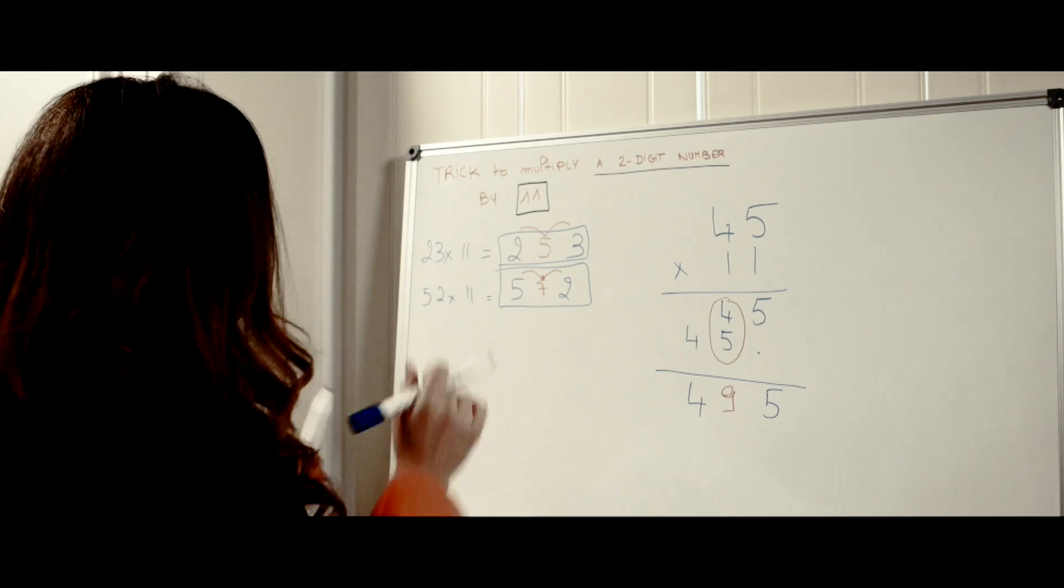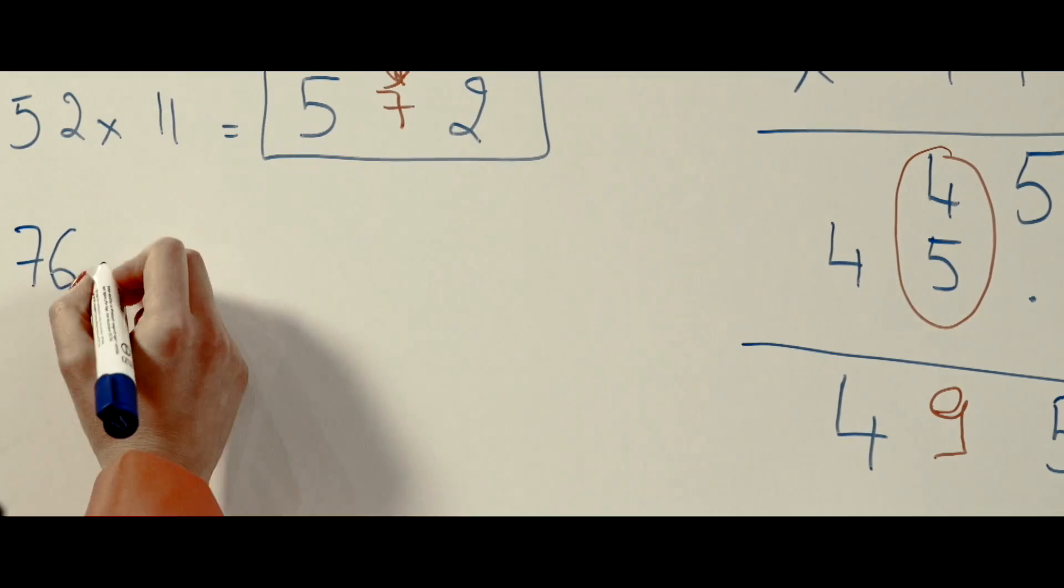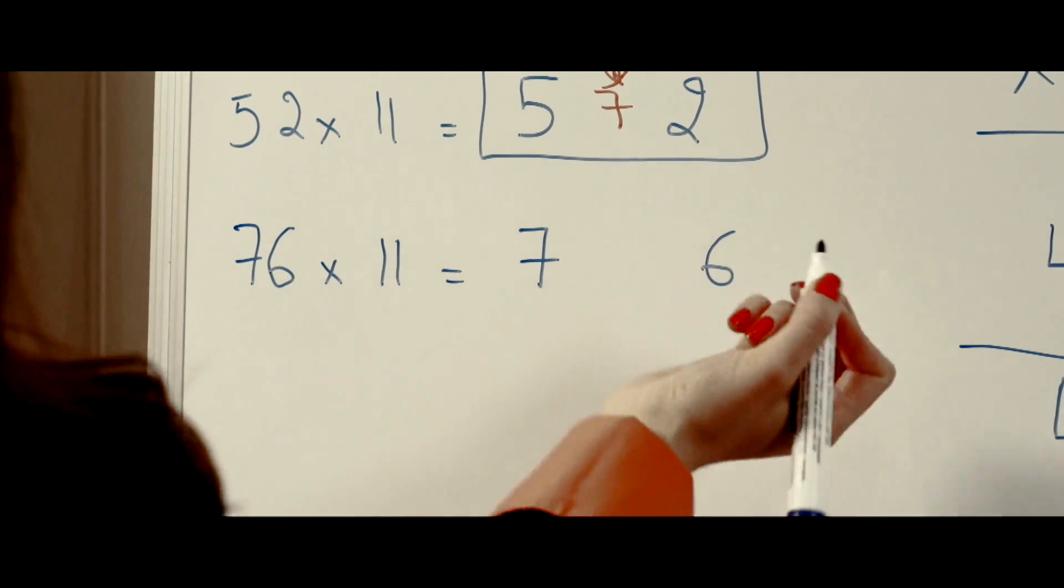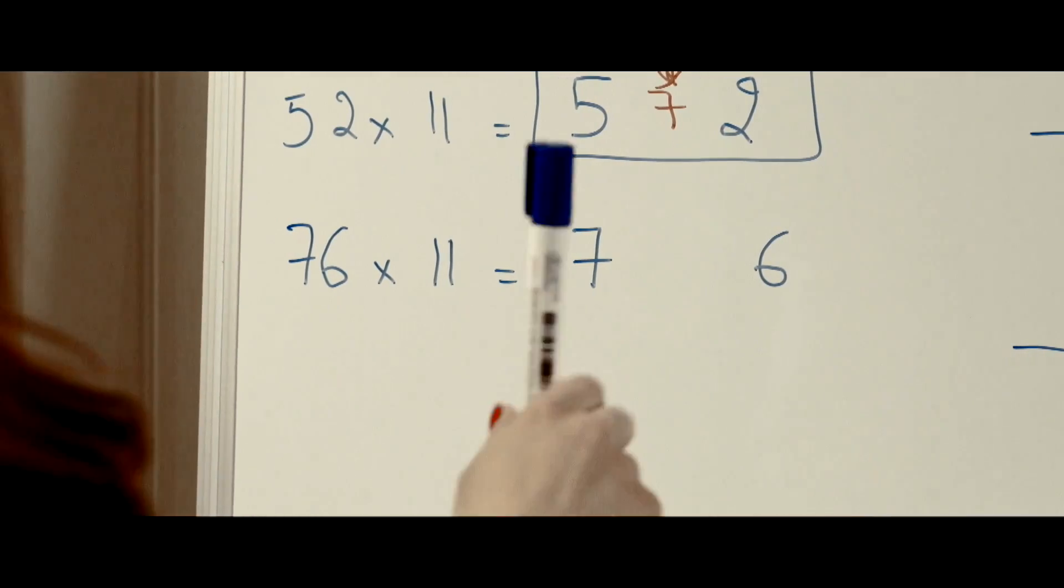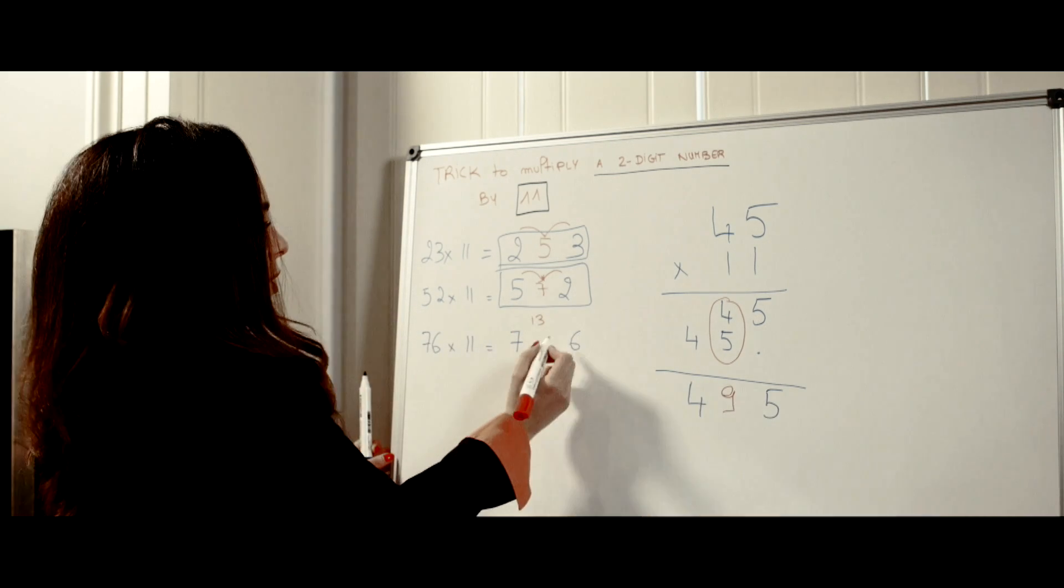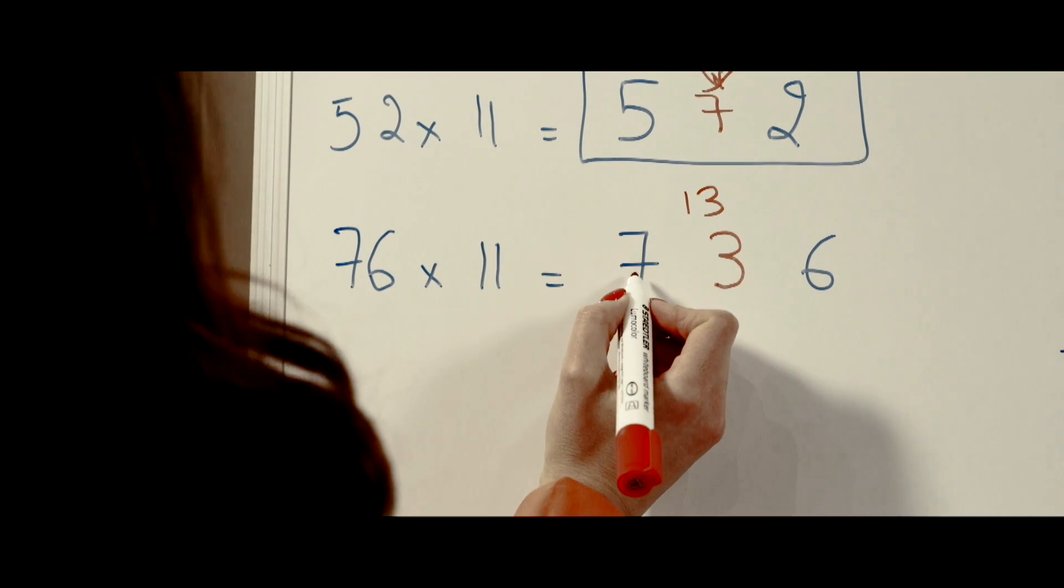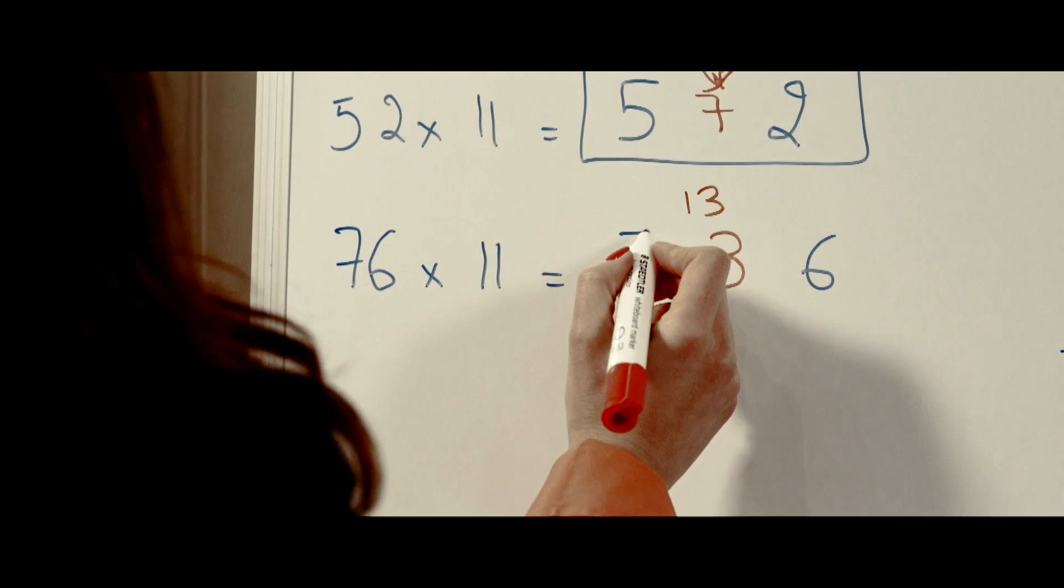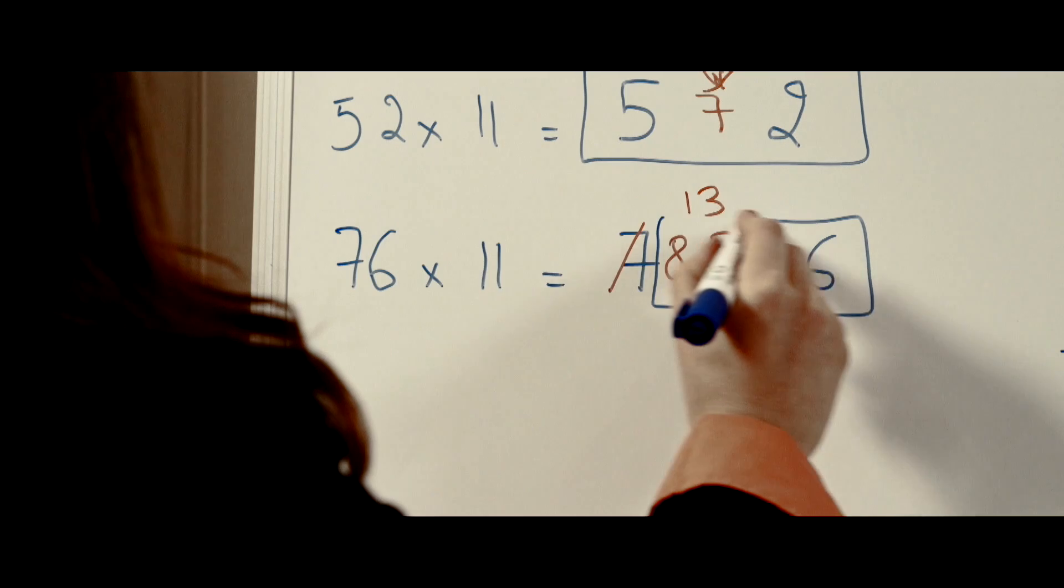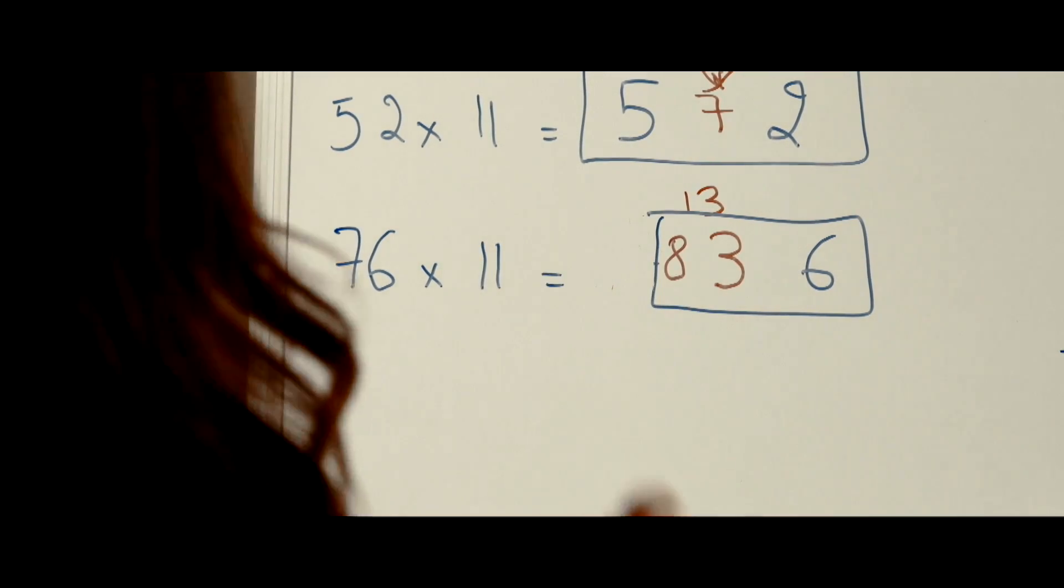And I'll just show you what happens quickly. So imagine we pick 76 times 11. So normally you would do 7 and 6 but what happens is that 7 plus 6 is actually 13. So it's 3 still in the middle but you have this 1 here that you have to add to the 7. So the 7 becomes an 8. So the answer is 8, 3, 6.